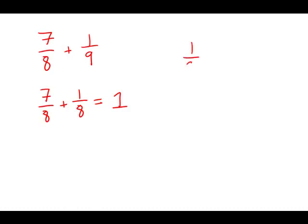Well, one-ninth is slightly smaller than one-eighth. If you make the bottom of a fraction bigger, you make the top of the fraction smaller. So that means that seven-eighths plus one-ninth is going to be something slightly smaller than one.